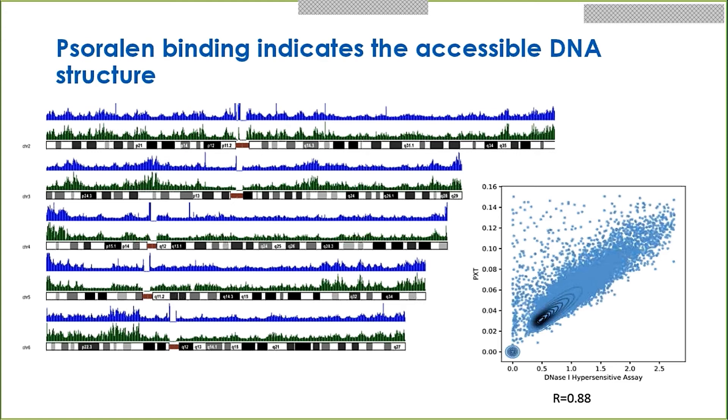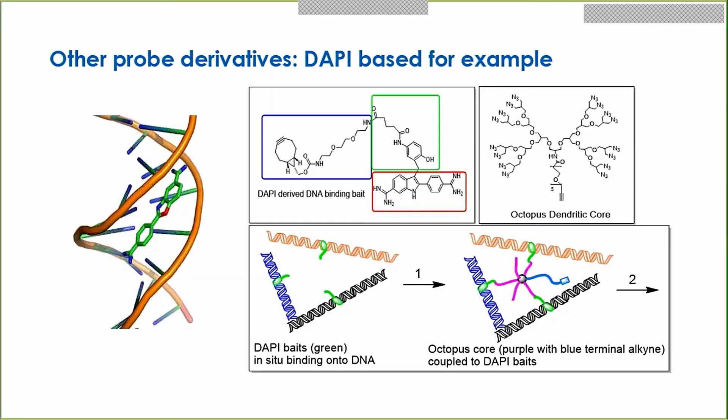Along this direction of developing direct DNA proximity capture probes using photocross-linking, we are also developing other probe derivatives, such as a DAPI probe. DAPI is a DNA minor groove binder, and in this probe design we have incorporated a bioorthogonal click-reaction moiety on the DAPI probe. The DAPI probe is first incubated and binds in situ to the DNA. We also designed an octopus dendritic core with multiple arms of variable lengths to tether the DAPI base, so that after digestion the DAPI-tethered DNA can be captured. This project is still in progress.